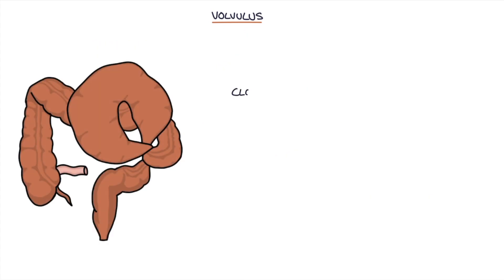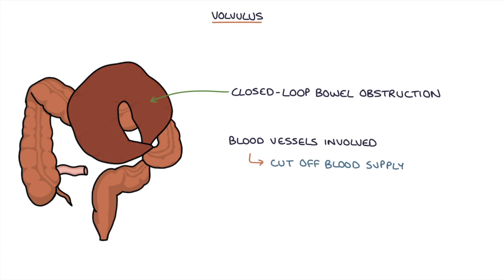Twisting in the bowel leads to a closed loop bowel obstruction where a section of the bowel is isolated by the obstruction on either side. The blood vessels that supply the bowel can be involved, cutting off the blood supply to the bowel which leads to bowel ischemia. Ischemia leads to death of the bowel tissue which is called necrosis and eventually bowel perforation.